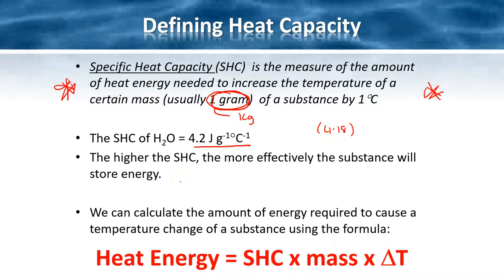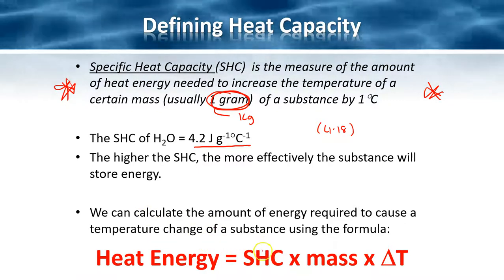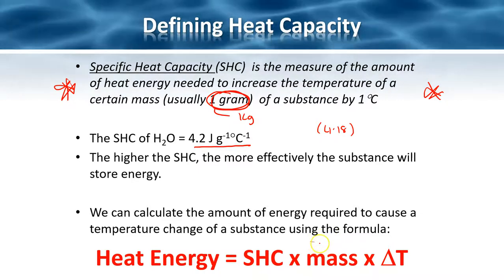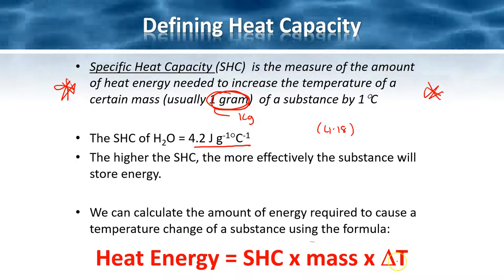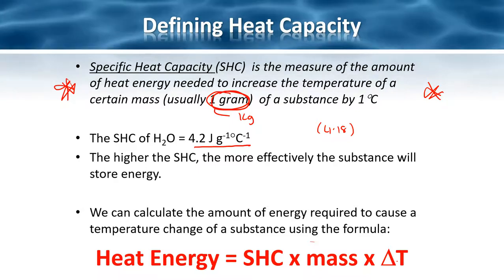The equation we use is that heat energy equals the specific heat capacity of the substance multiplied by the mass of the substance - and this is always the mass that is changing temperature - multiplied by the change in temperature. Has it gone up or down, and by what magnitude?